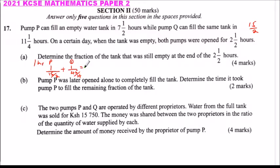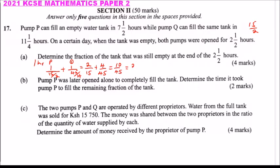When you write the inverse, this is 2 over 15 plus 4 over 45. When you add this, you get 6 over 45 plus 4 over 45, which is 10 over 45, equal to 2 over 9. So in 1 hour, both pumps together fill 2 over 9 of the tank.